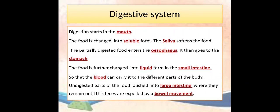Answers: Digestion starts in the mouth. The food is changed into soluble form. The saliva softens the food. The partially digested food enters the oesophagus. It then goes to the stomach. The food is further changed into liquid form in the small intestine so that the blood can carry it to the different parts of the body. Undigested parts of the food push into the large intestine where they remain until the species are expelled by a bowel movement.